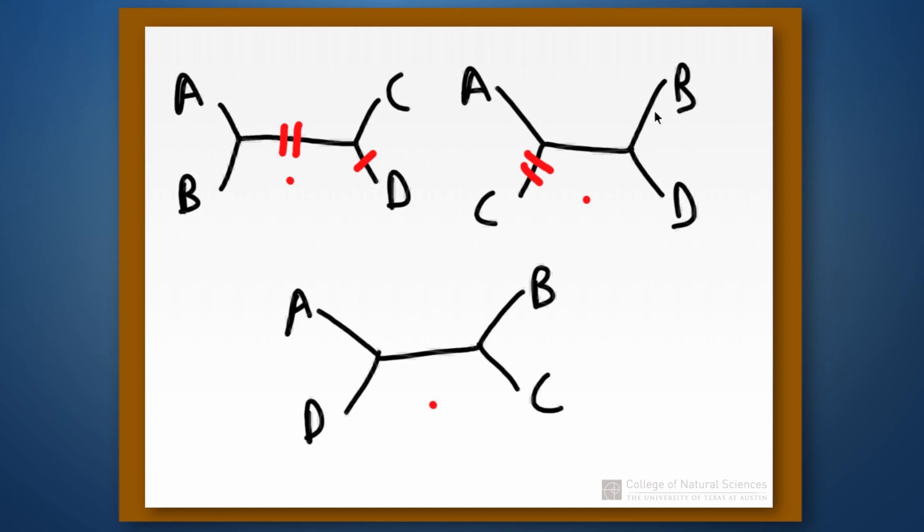Then because these are the three possible unrooted trees and this one here only requires one evolutionary change or one step, this is the most parsimonious tree for the data set that we had for these four taxa. And so this would become the most parsimonious tree and that would be the one that we work with.